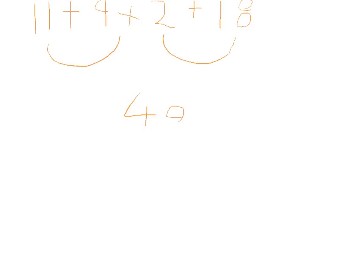Another example here, this is 11 plus 9 plus 2 plus 18. So we can very quickly see 11 and 9 go together because they're compatible. 2 and 18 go together because they're compatible, making 20 plus 20 which makes 40.